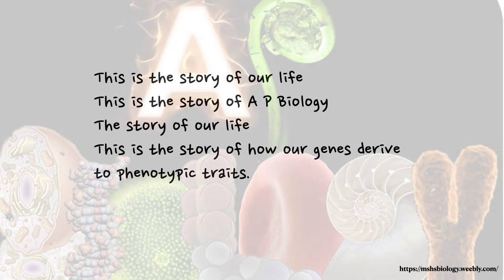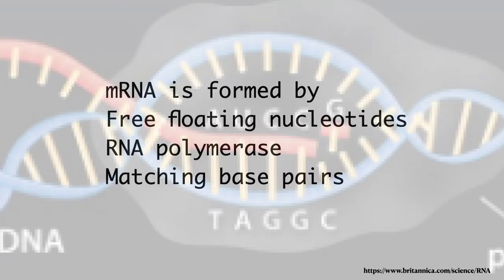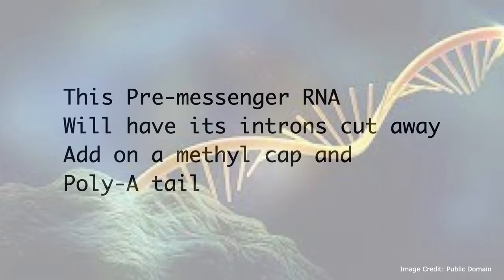This is the story of how our genes give rise to phenotypic traits. mRNA is formed by free-floating nucleotides, with RNA polymerase matching these pairs. This pre-messenger RNA will have its introns cut away, and a methyl cap and poly-A tail added on.